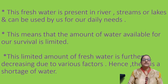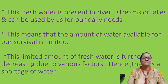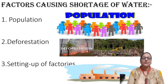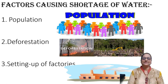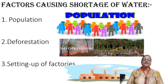There are so many reasons for the decrease of water on Earth's surface. We will study the details in the next video, but you have to understand all these points. Factors causing shortage of water: number one — population. Population has increased, and that is why there is a shortage of water.